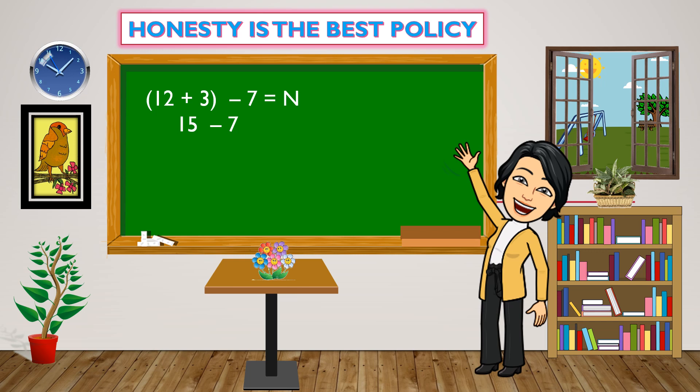Then, 15 minus 7. So, 15 minus 7 equals 8. So, 8 is the correct answer.